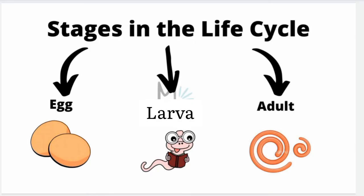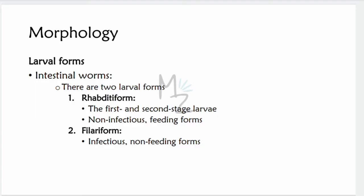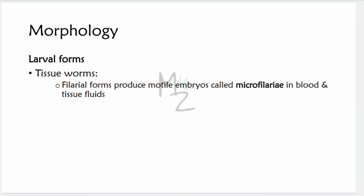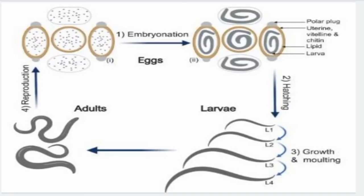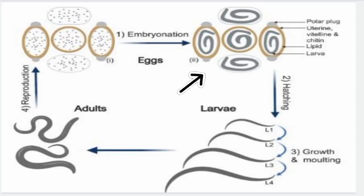For larval morphology, intestinal worms have two forms: the rhabditiform larvae (first and second stage), which are non-infectious and feeding; and the filariform larvae, which are infectious and non-feeding. Tissue nematodes — Wuchereria, Onchocerca, and Loa loa — are filarial worms that produce motile embryos called microfilariae in the blood and tissue fluids. In the life cycle diagram, the adult reproduces, releasing eggs, which on embryonation form embryonated eggs.